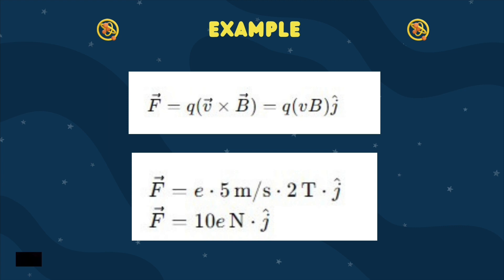This force will cause the particle to move in a circular path as it continues to move along the X direction, due to the combined effects of its velocity and the magnetic field. This is the principle behind the operation of cyclotrons or particle accelerators.